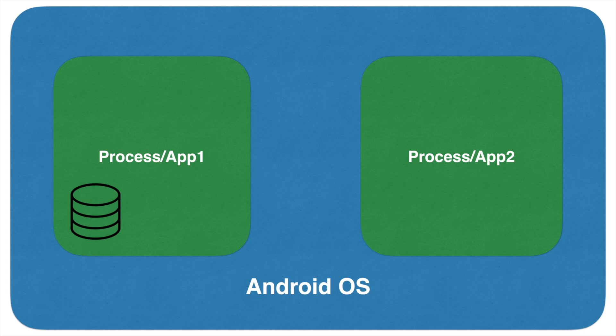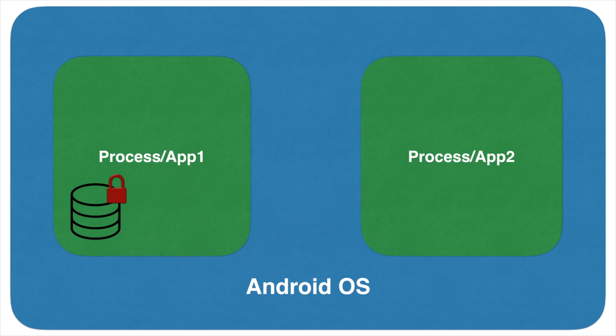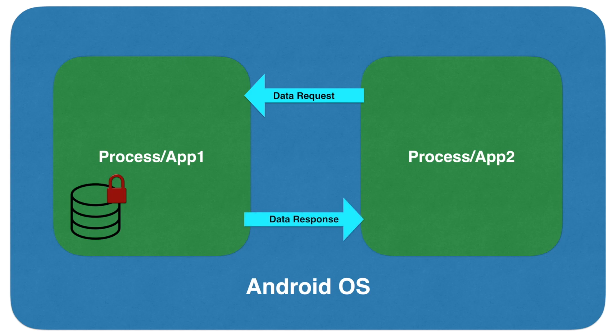There could be a scenario wherein App2 wants to connect to App1's database. This is not possible because the database or the data being maintained by App1 is private to that particular app. The only legal mechanism is that App2 needs to request the data from App1, and App1 will respond back with the data.